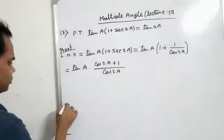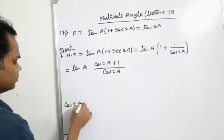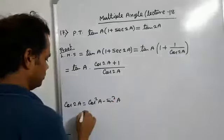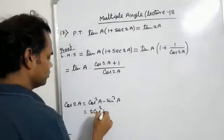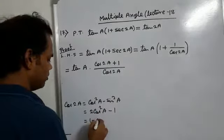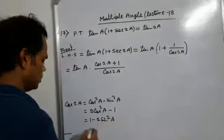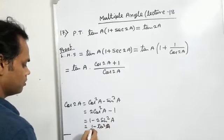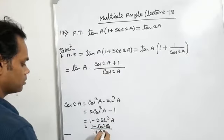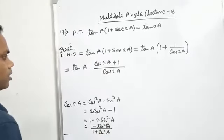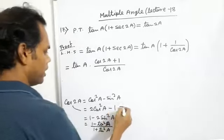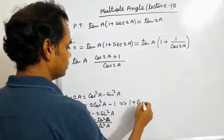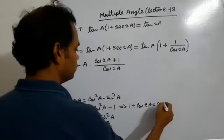Formula of cos 2A is cos squared A minus sin squared A, 2 cos squared A minus 1, 1 minus 2 sin squared A, and 1 minus tan squared A over 1 plus tan squared A. So by this formula, we can write 1 plus cos 2A equals 2 cos squared A.